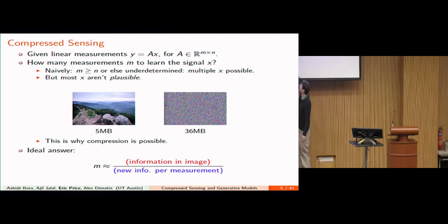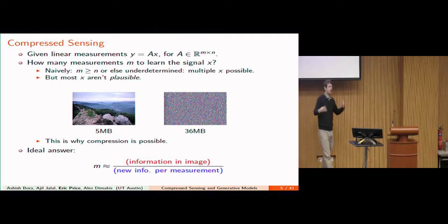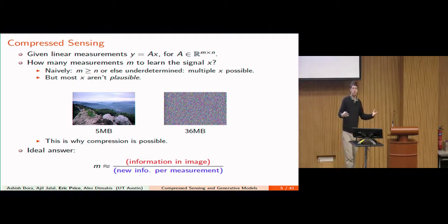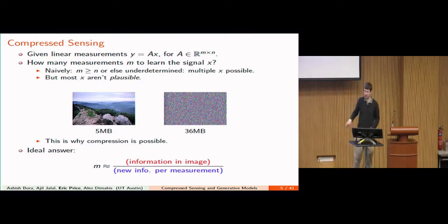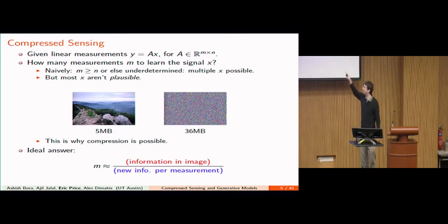Ideally, the number of linear measurements you need should be about the amount of information in the signal divided by the amount of information you get per measurement. So the whole game is: given these measurements, how do I find a good low-information image that matches my measurements? And how do I express what it means for an image to have low information? If the numerator is low and the denominator is high, then I don't need many measurements.